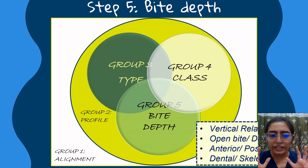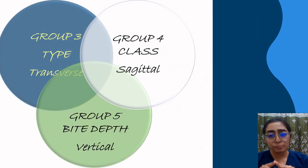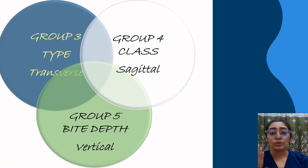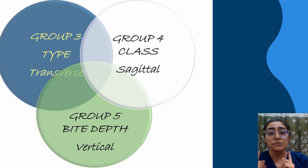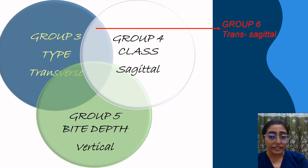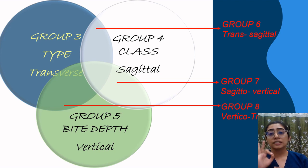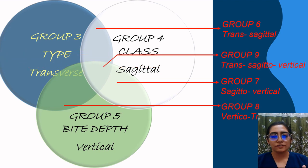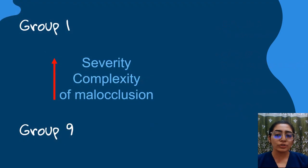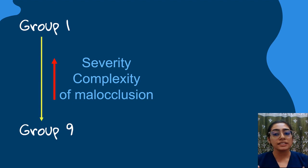Looking closely at the Venn diagram, apart from the three planes of space, overlapping regions describe additional groups. The overlap between the transverse and sagittal plane describes Group 6; Group 7 arises from the overlap between the sagittal and vertical plane; Group 8 results from overlap between the vertical and transverse discrepancy; and Group 9 describes a discrepancy in all three planes of space. Following these steps defines nine groups of malocclusion, with complexity and severity increasing with the group number.